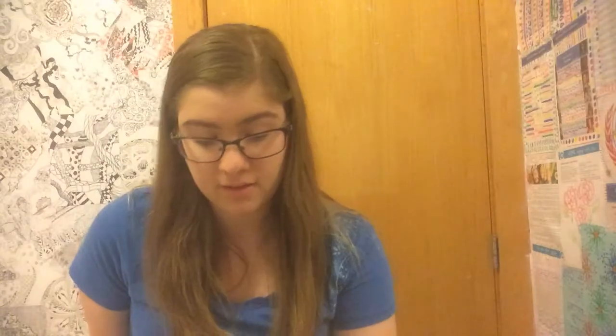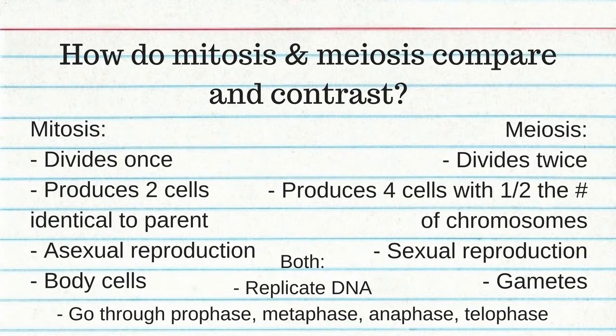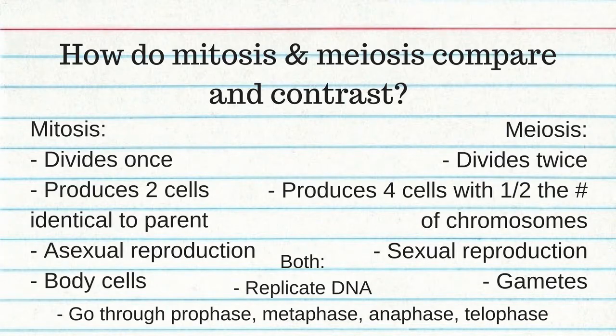Gametogenesis is the formation of gametes through the process of meiosis. Spermatogenesis produces four sperm. Oogenesis produces one egg and three polar bodies that don't do anything. Comparing mitosis and meiosis: mitosis divides once while meiosis divides twice; mitosis produces two cells identical to the parent, meiosis produces four cells with half the chromosomes; mitosis is asexual and meiosis is sexual; mitosis is in body cells and meiosis is in gametes. Both replicate DNA and go through prophase, metaphase, anaphase, and telophase.